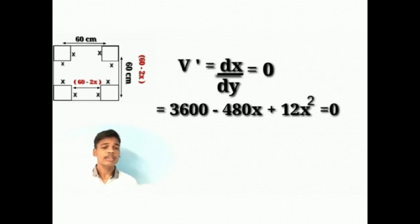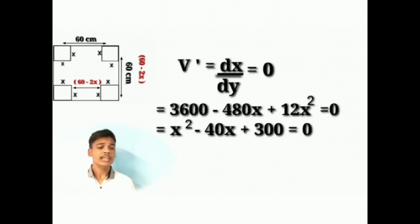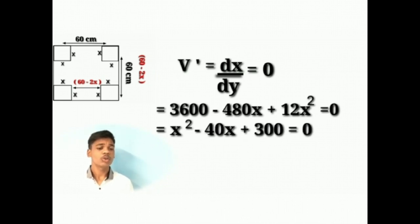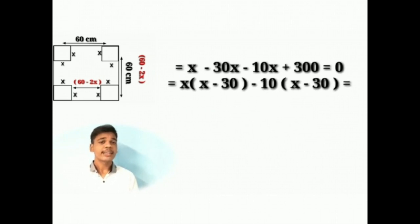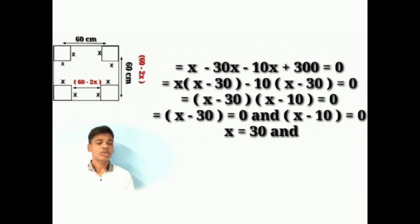After taking 12 as a common factor we will get the equation as x squared minus 40x plus 300 is equal to 0. After taking the factors we will have x squared minus 30x minus 10x plus 300 is equal to 0. So after solving it we will get x is equal to 30 and x is equal to 10.